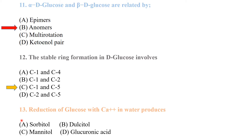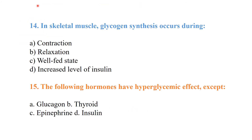Reduction of glucose with calcium in water produces sorbitol. In skeletal muscles, glycogen synthesis occurs during the relaxation of the muscles.